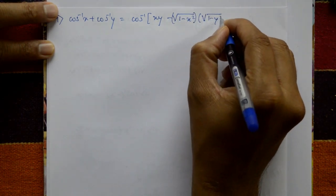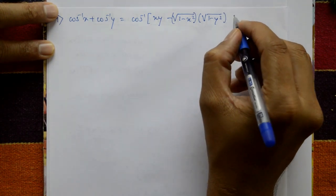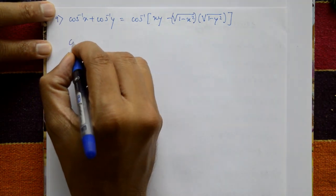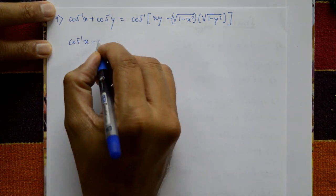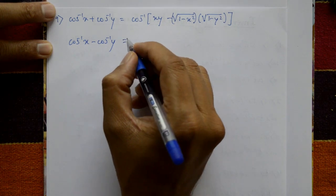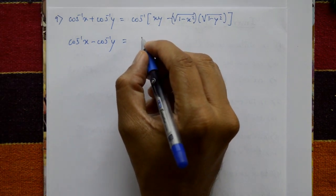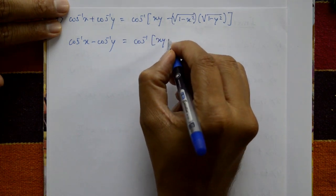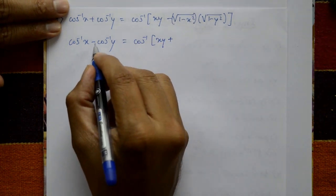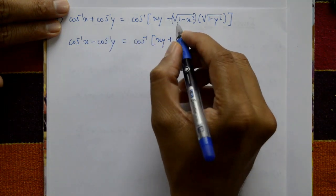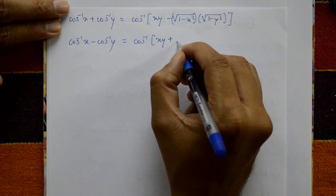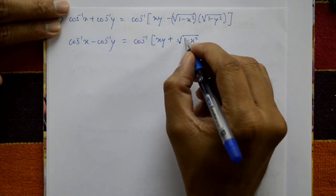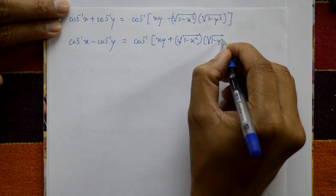The ninth one: cos inverse x minus cos inverse y is equal to cos inverse of xy plus square root of 1 minus x square into square root of 1 minus y square.